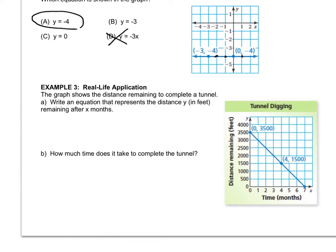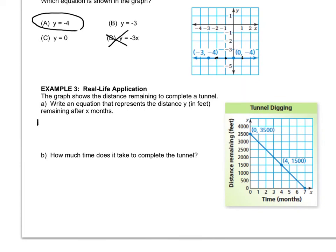Example three, the graph shows the distance remaining to complete a tunnel. First we have to write an equation that represents the distance remaining after x months. So we have to find the slope, and we have to find the y-intercept. Well, the y-intercept is right here at 0, 3500. And so now I have to get the slope. So I'm going to start at the intercept, and I'm going to go down and to the right.